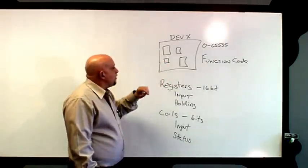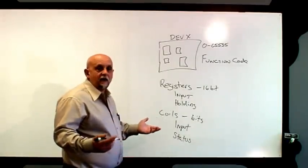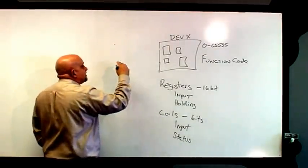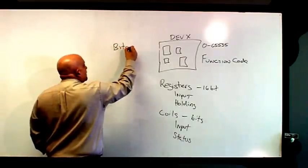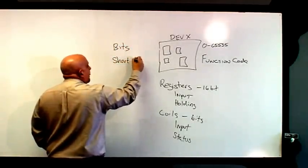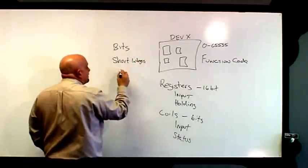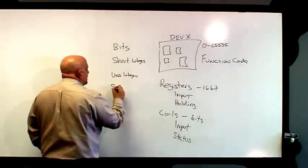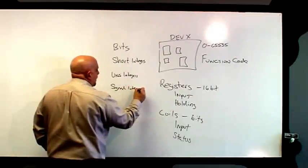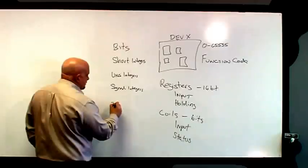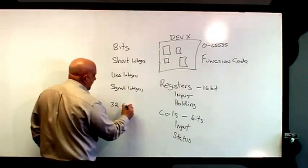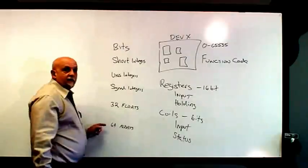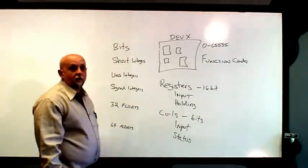Now the question came up: we've got registers and coils, but if you have all these different data types that we normally work with, how do they match up? What are those typical data types? We've got bits, short integers, unsigned integers, signed integers, 32-bit floats, and 64-bit floats for when you need a lot of precision. So how does this stuff map into that register structure?